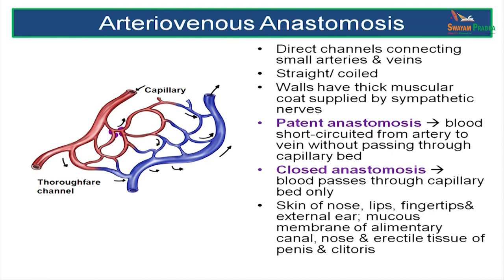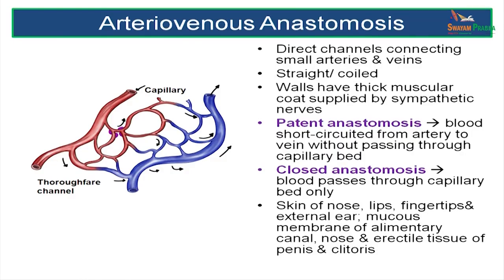Arteriovenous anastomoses are direct channels which bypass the capillary bed and run straight from the arteriole to the venule. There are two types: a patent anastomosis where blood is short-circuited from an artery to a vein bypassing the capillary bed, or a closed anastomosis where blood passes through a capillary bed. Closed anastomoses are seen in the skin of the nose, lips, fingers, the external ear, mucous membranes of the alimentary tract, the nose, and erectile tissues of the penis and clitoris.